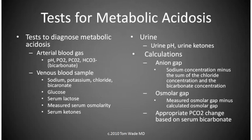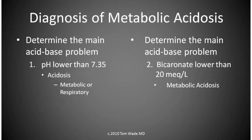When metabolic acidosis is suspected, we perform tests on blood drawn from an artery and from blood drawn from a vein. We examine the urine and we make calculations. To diagnose metabolic acidosis, we go through four steps. First, we look at the pH. If the pH is lower than 7.35, then we have an acidosis, either metabolic or respiratory.